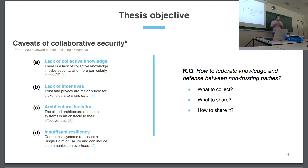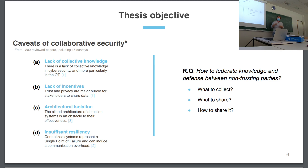The third point is the problem of isolation, especially architectural ones — more tied to machine learning. When you want to train a model, you need a lot of data, and if your data is isolated, you don't have enough elements to train something accurate. And finally, the problem of resiliency: when you have a collaborating system, you need an architecture to support it, and it's often centralized, and centralized systems have a set of issues. So we built this question: how to federate knowledge and defense mechanisms between non-trusting parties.